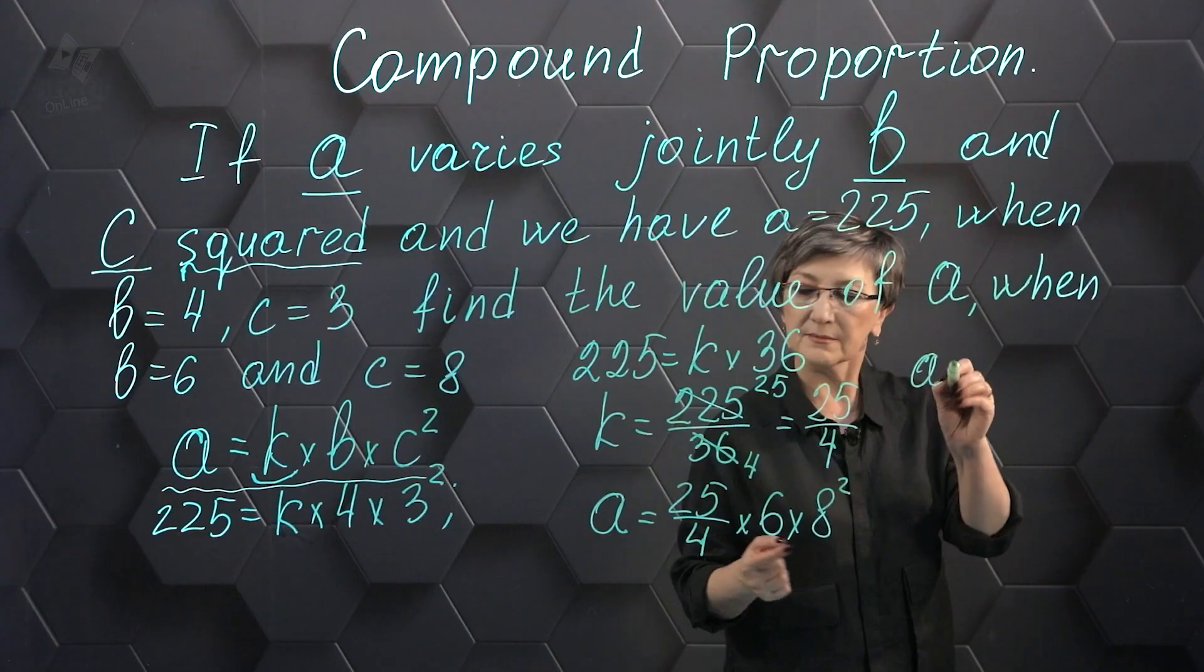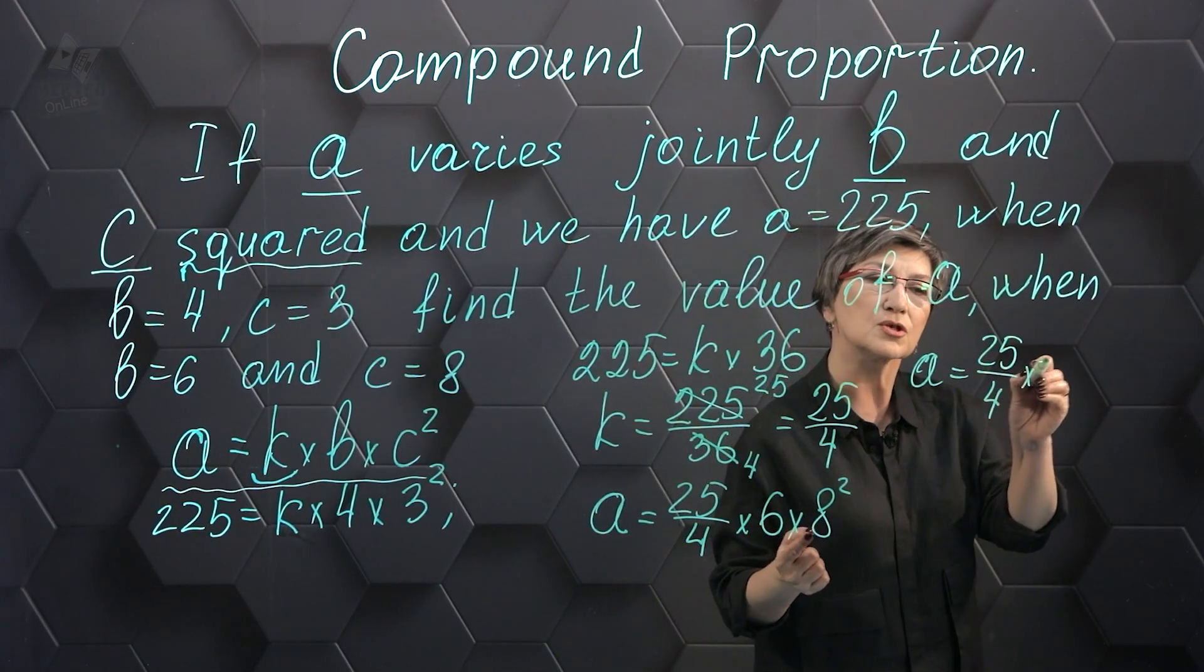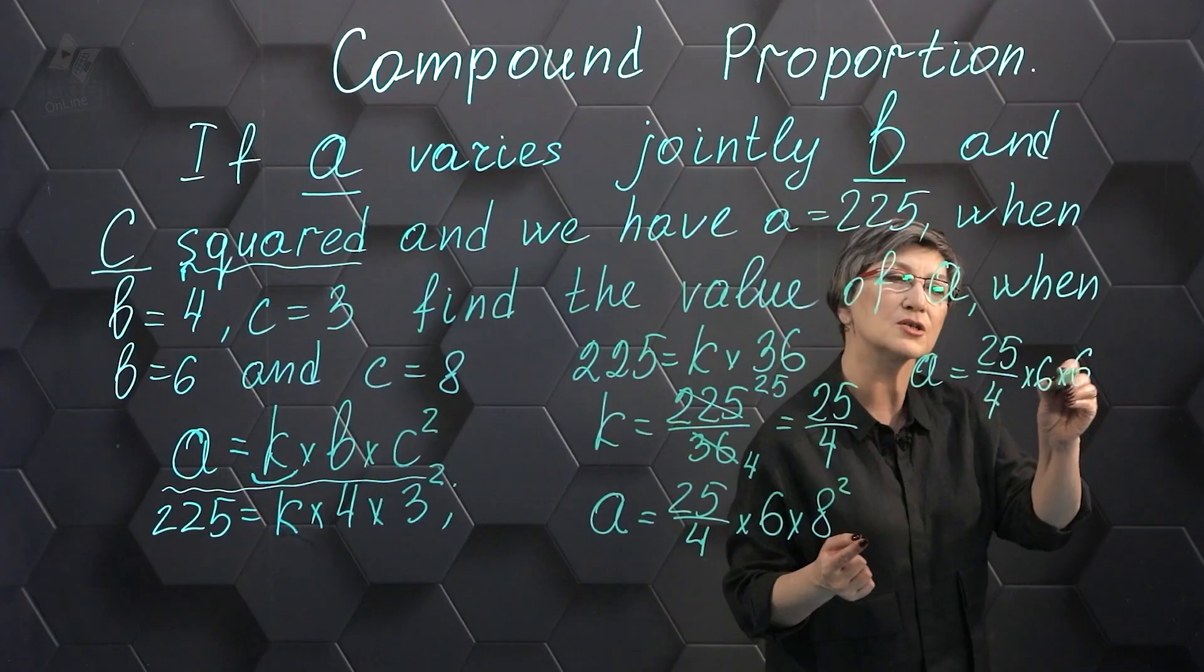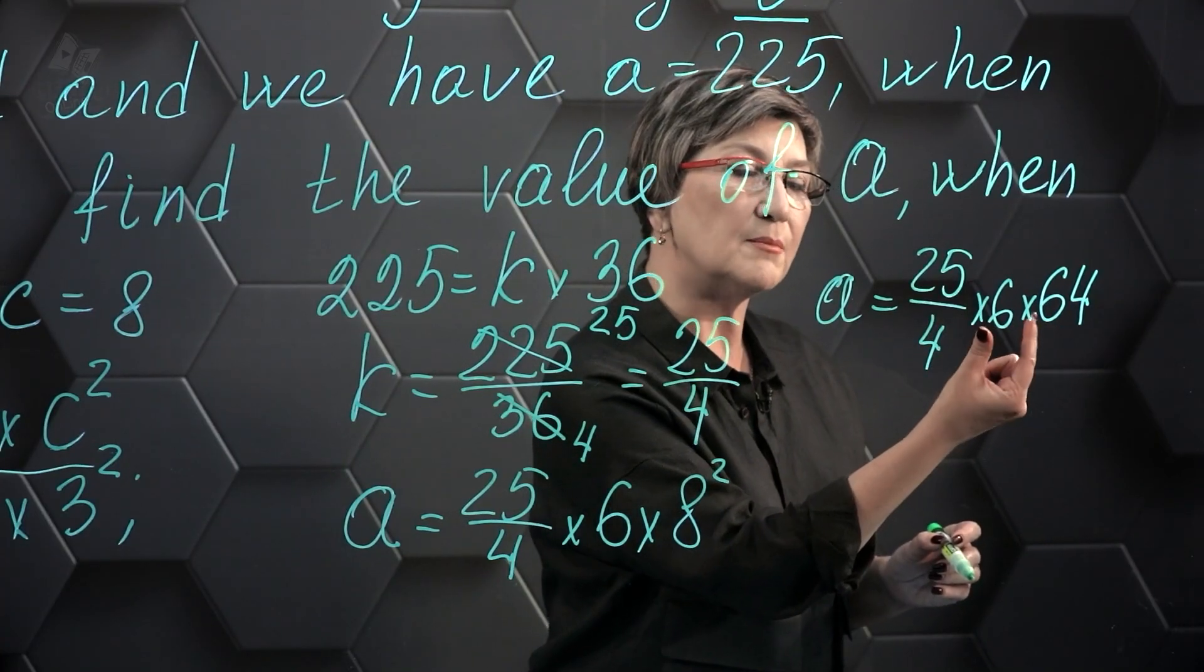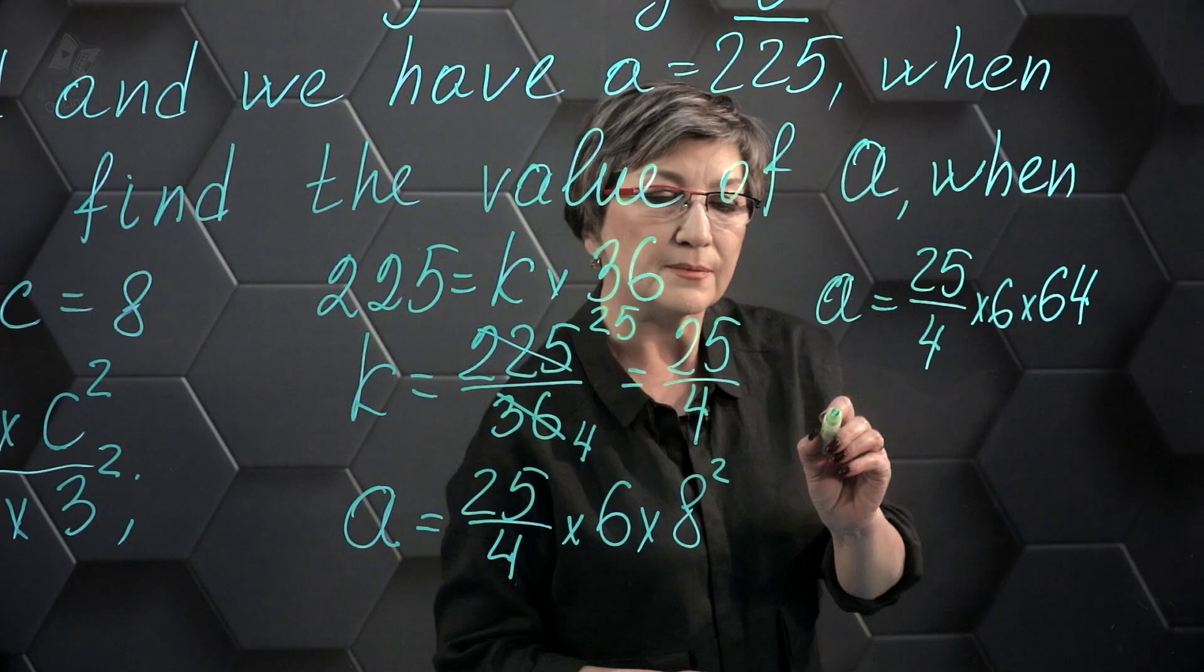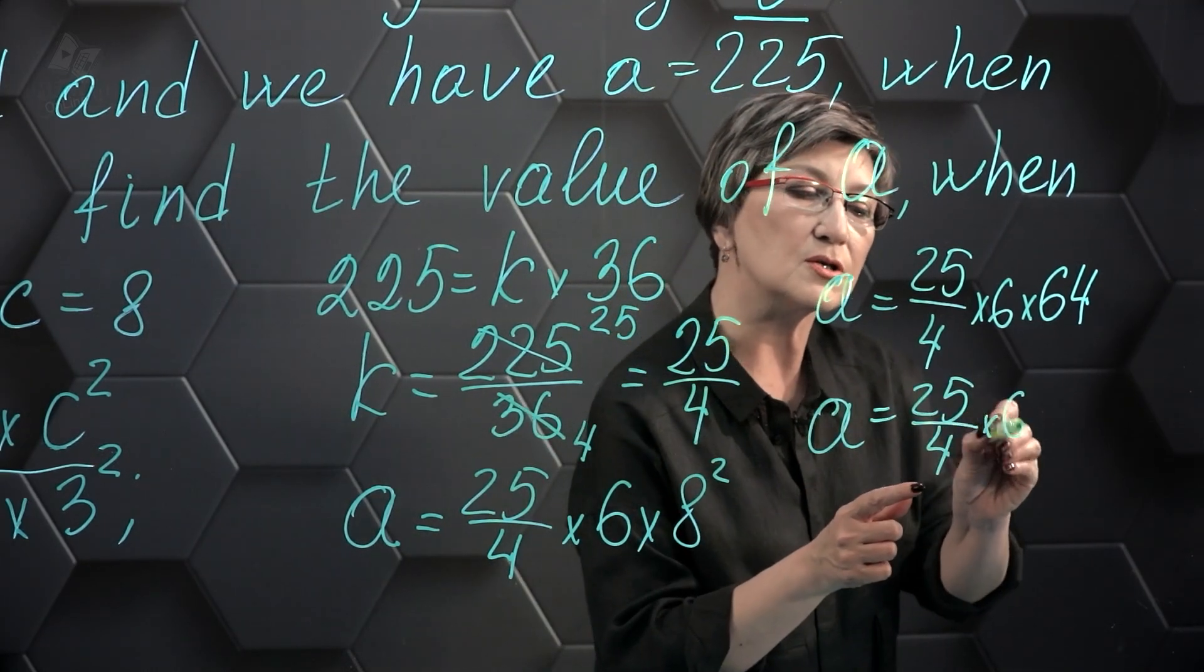We can calculate the value of a. a equals 25 fourths times 6 times 64. Let's rearrange: a equals 25 fourths times 64 times 6.